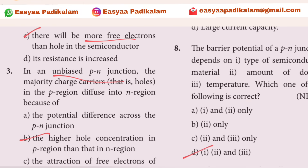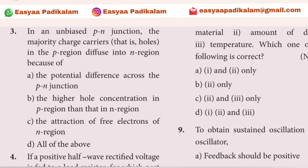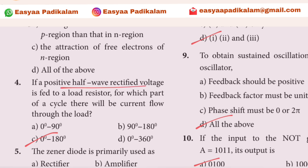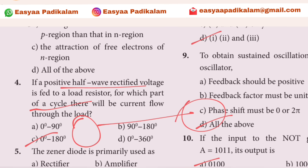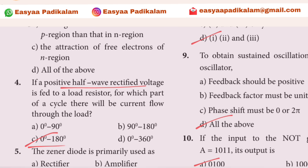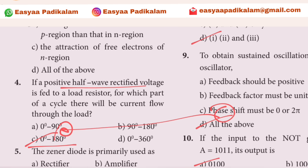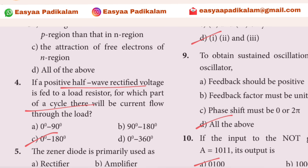Third question: in an unbiased PN junction, majority carriers are considered. When the cycle is straight, they are at 180 degrees. Zero is 180 degrees. So, when you consider it, you need an eta-based protector.